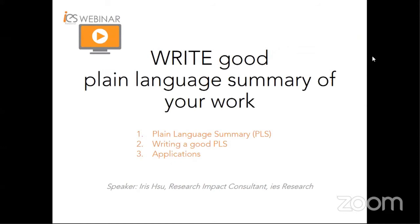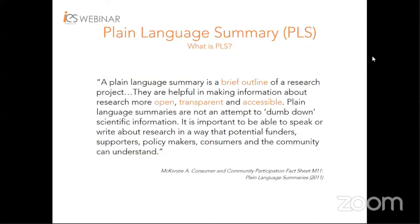Today we will talk about what is a plain language summary or PLS, how to write a good PLS, and how to use it to benefit you as a researcher. A PLS is a brief outline of research which helps make information about the research work more open, transparent, and accessible. It is not dumbing down scientific information, but to speak or write about research in a way that non-field specialists can understand. The keywords here are open, transparent, accessible, and understandable — allowing readers to comprehend the work without difficulties.